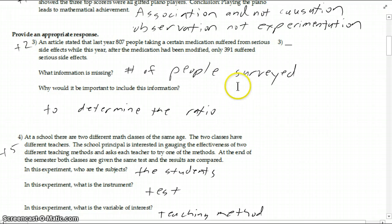Number three, obviously you want to know how many people have been surveyed, and then take those proportions or the ratios to see if it's actually different. Because we don't know how many people actually took the medication, so we have no idea if this is good or bad.